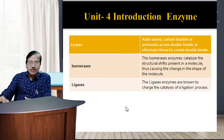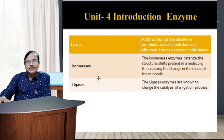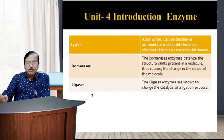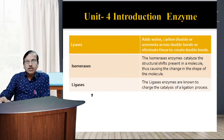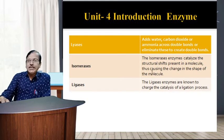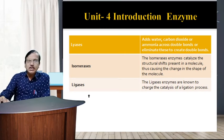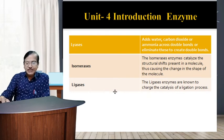The fifth class is isomerases — enzymes involved in all processes of isomerization reactions. The reaction is A → A' (interconnection of isomers). The biochemical property of isomerases is that they catalyze structural shifts within a molecule, causing a change in the shape of the molecule.